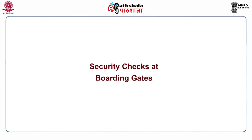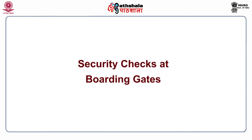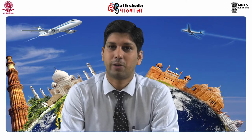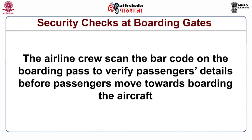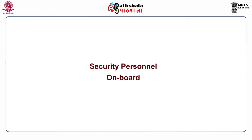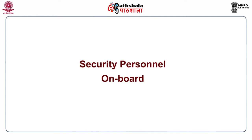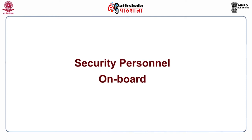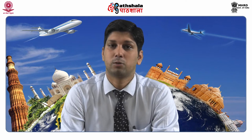Security checks at boarding gates: At boarding gates, the airline crew and security personnel make sure that passengers are carrying their boarding passes and that baggage has passed through scanning by verifying and stamping. The airline crew scan the barcode on the boarding pass to verify passenger details before boarding. Security Personnel Onboard: In some countries, authorities also depute security personnel to be present onboard the aircraft throughout the journey to safeguard passengers and crew against any unlawful events during the flight.